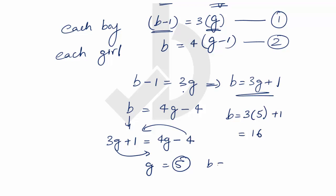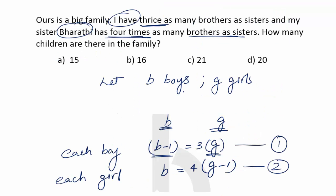So there are 5 girls and 16 boys. The total number of children in the family is 5 plus 16, which equals 21 children. Therefore, option C is the correct answer.